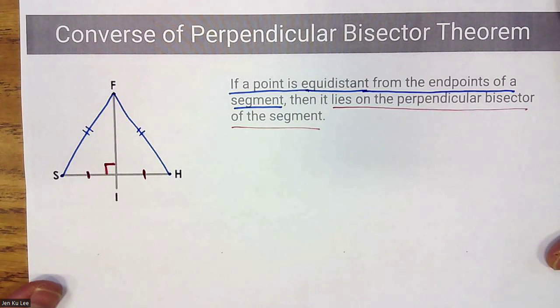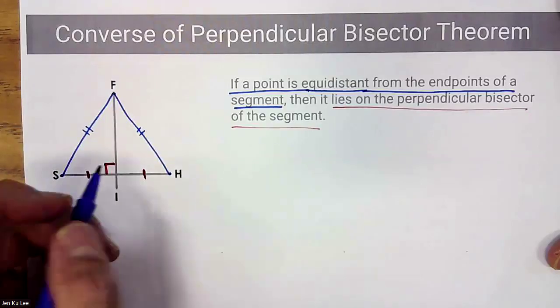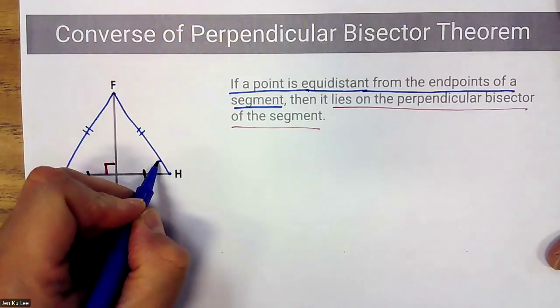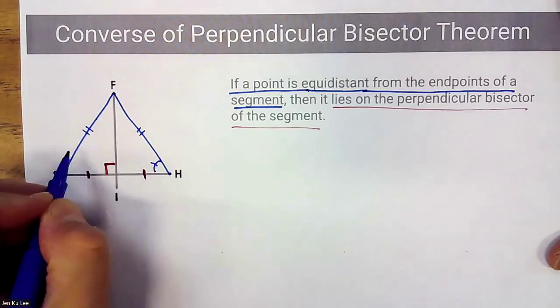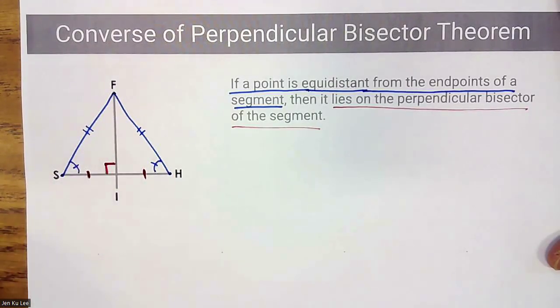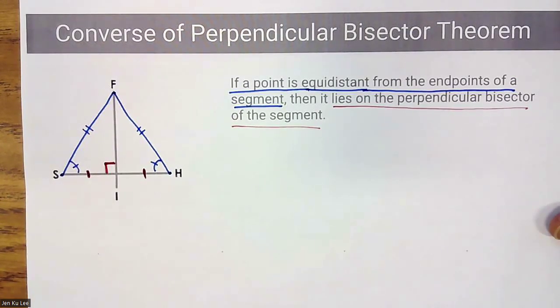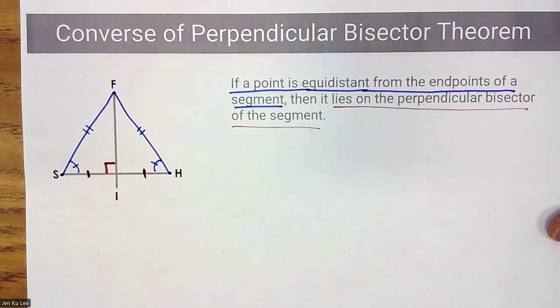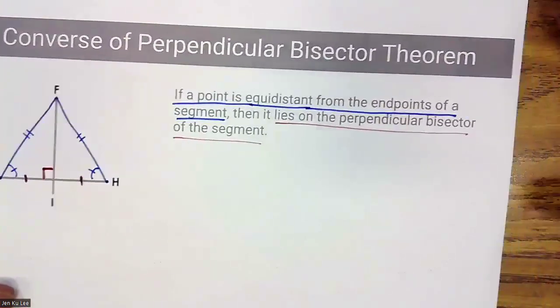And again, since it's an isosceles triangle, I know that those two base angles are congruent to each other. So we have the same picture, but the order of information is different — that is your theorem for today.